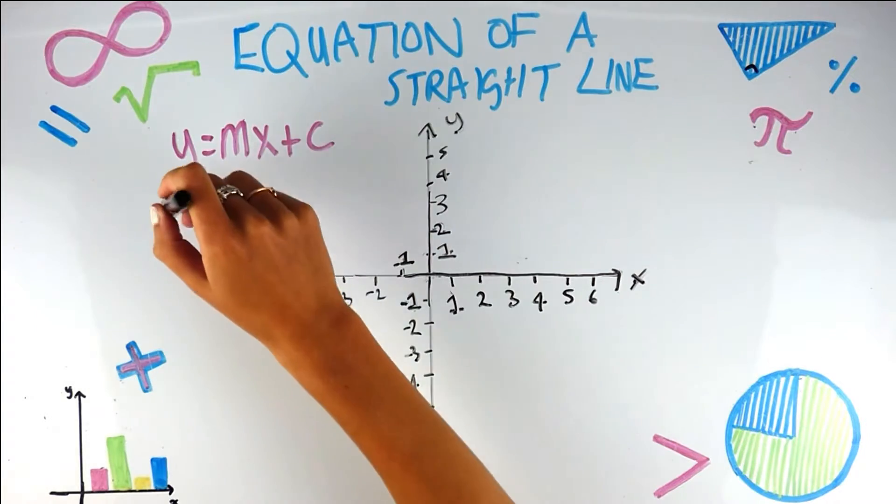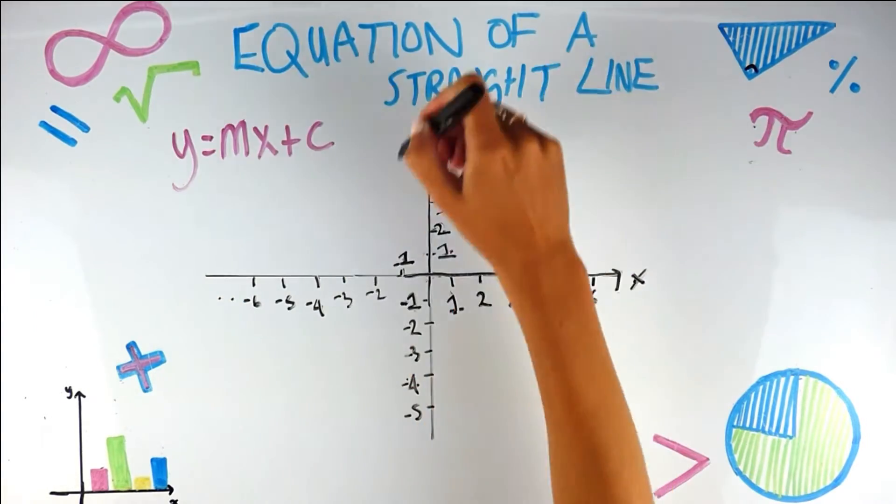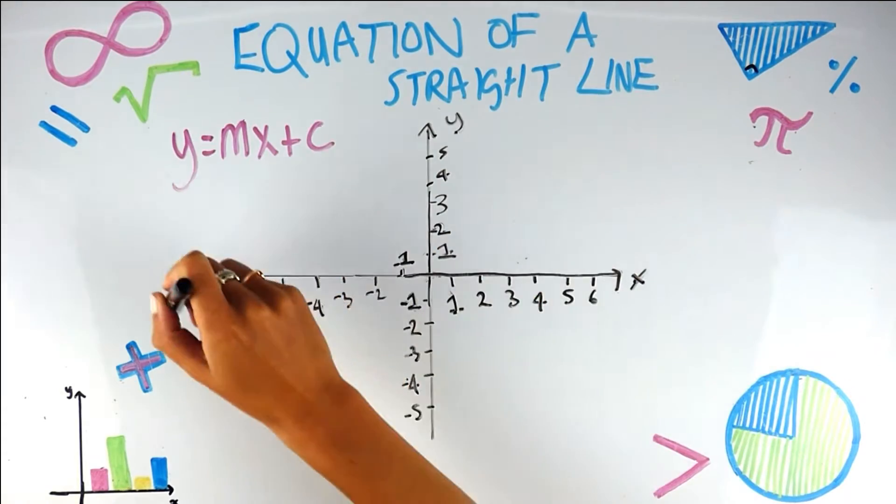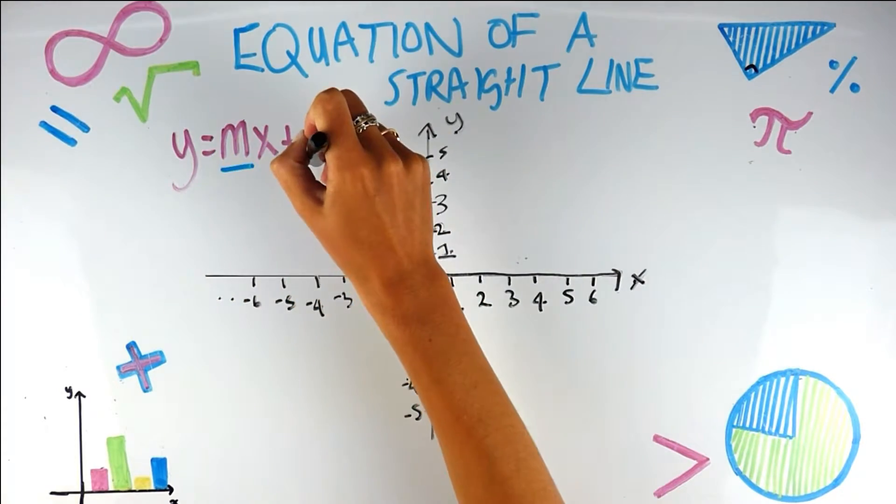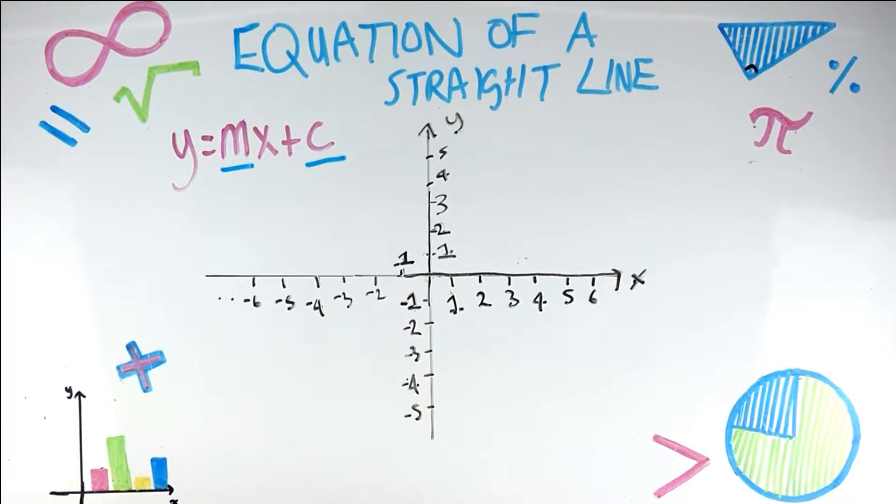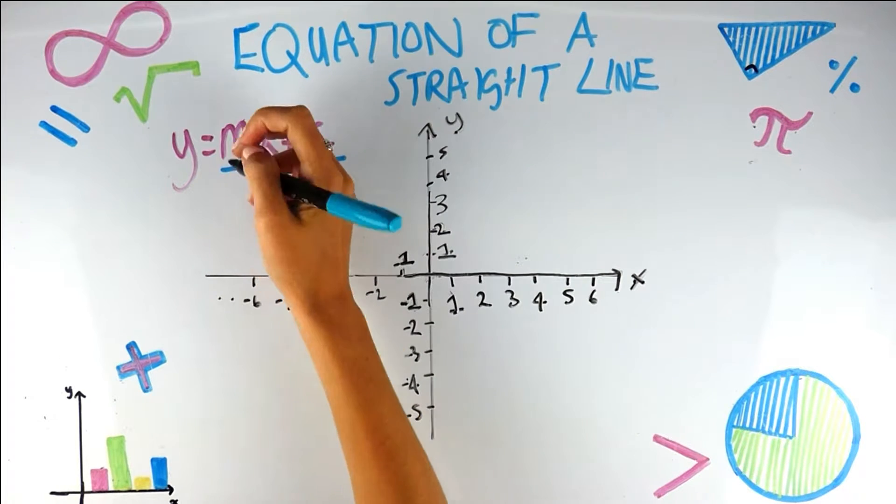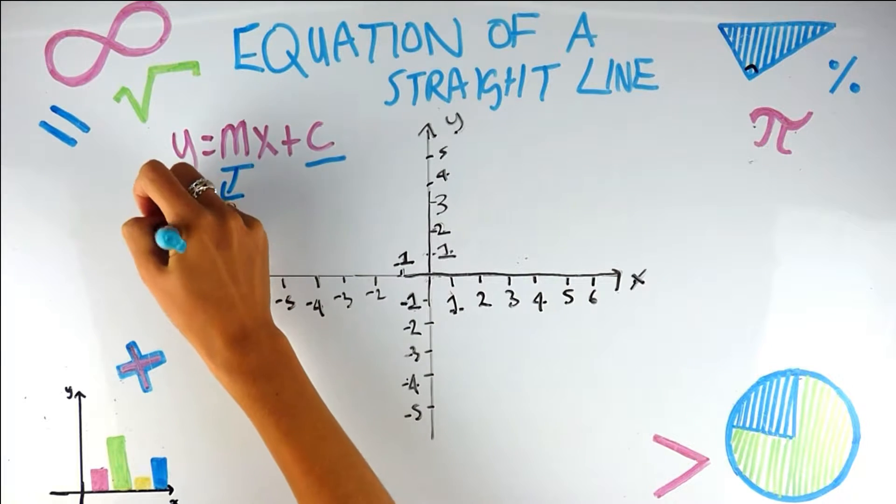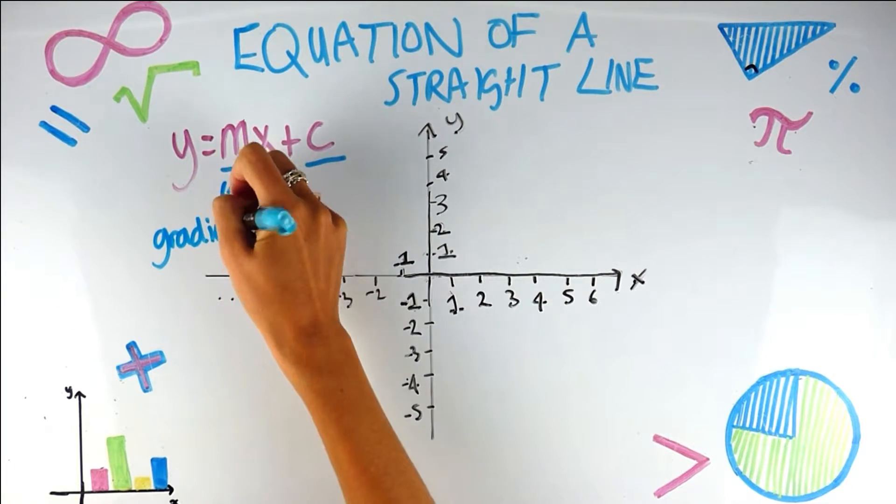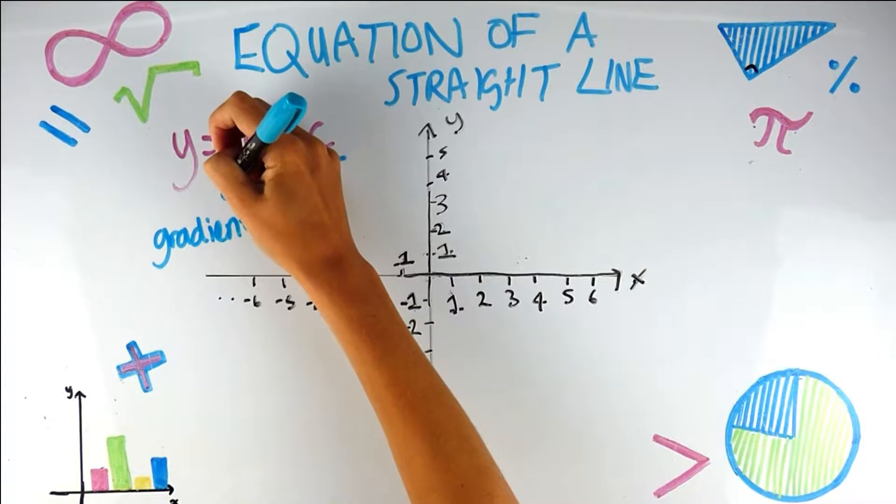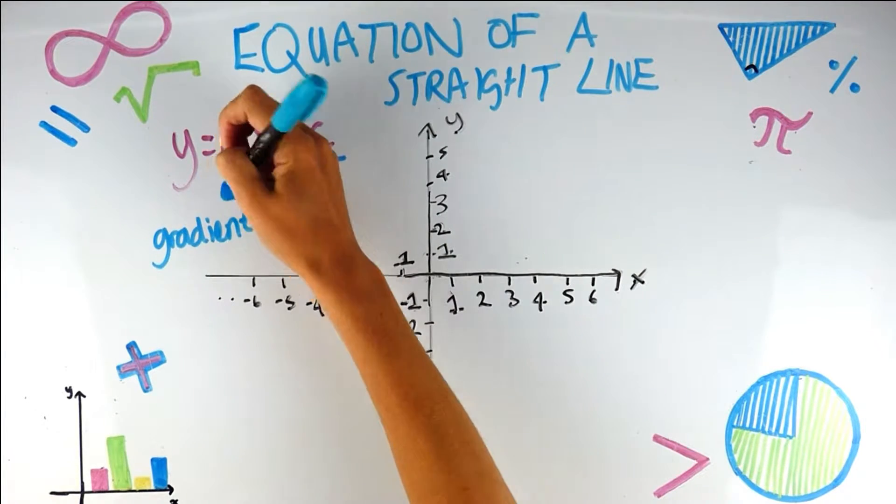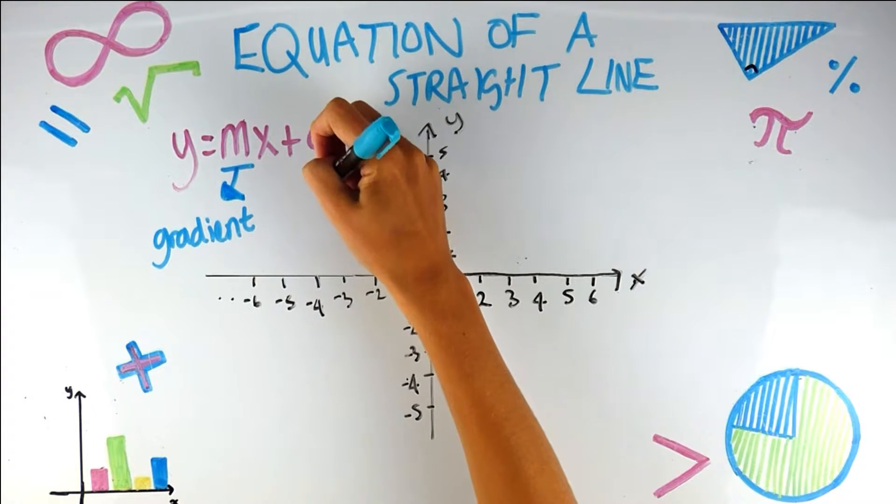We now need to know what this all means. So y equals, kind of talking about the y axis. x, we know we're kind of talking about the x axis. But what is this m and what is this c? In a previous video, I did a video about gradients and I called gradient m, which might seem a bit random considering there's no m in the word gradient and it's kind of annoying when teaching this topic because how am I going to enforce into people's heads that m is the gradient of the straight line. So unfortunately you're just going to have to know that. Maybe learn it because it doesn't make sense.